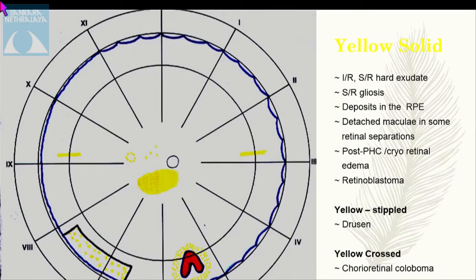Yellow color is used for anything inside the retina — intraretinal and subretinal hard exudates, subretinal gliosis, deposits in the retinal pigment epithelium, detached macula in retinal separations, laser or cryotherapy marks, and retinoblastoma. Yellow stipple is used for drusen. Yellow cross, though not shown here, is used for choroidal coloboma.